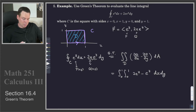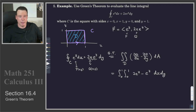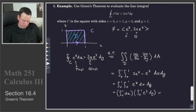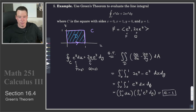But Green's Theorem tells me I don't have to do that, because I can get the same result by integrating over the 2D region D of this new function — the derivatives of the original vector field. The integral becomes the integral from 0 to 1, 0 to 1 of e^y dx dy. Because this is a separable integral, I can do the two integrals independently: the integral from 0 to 1 of dx is just 1, and the integral from 0 to 1 of e^y dy is e^1 minus e^0. So our final answer is e minus 1.